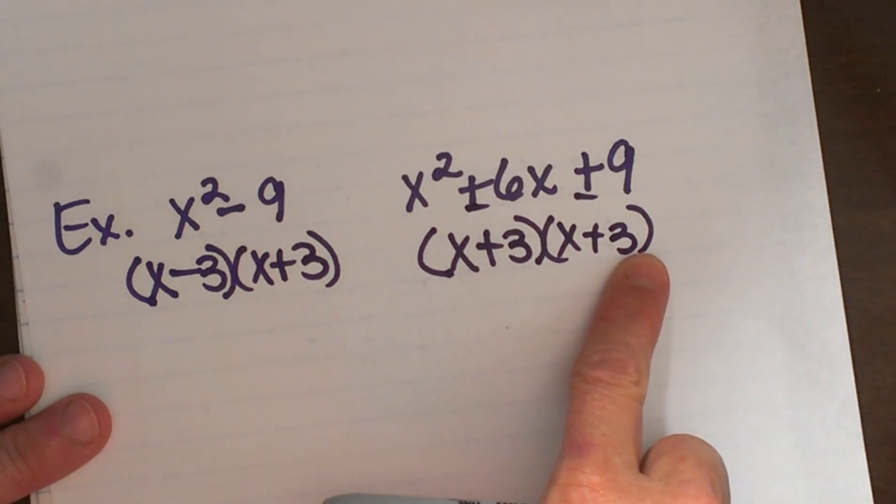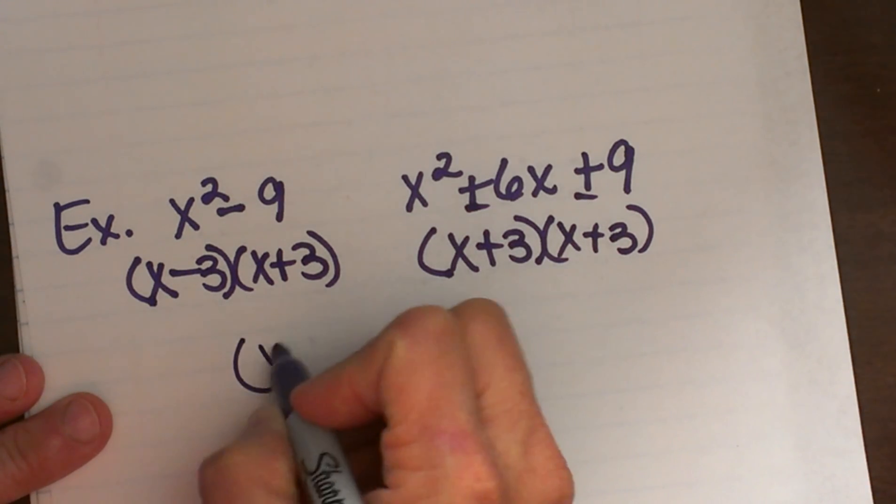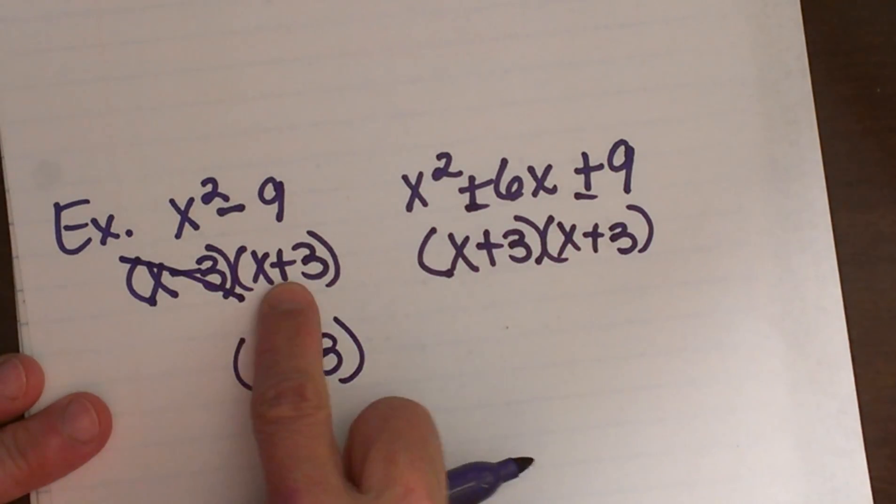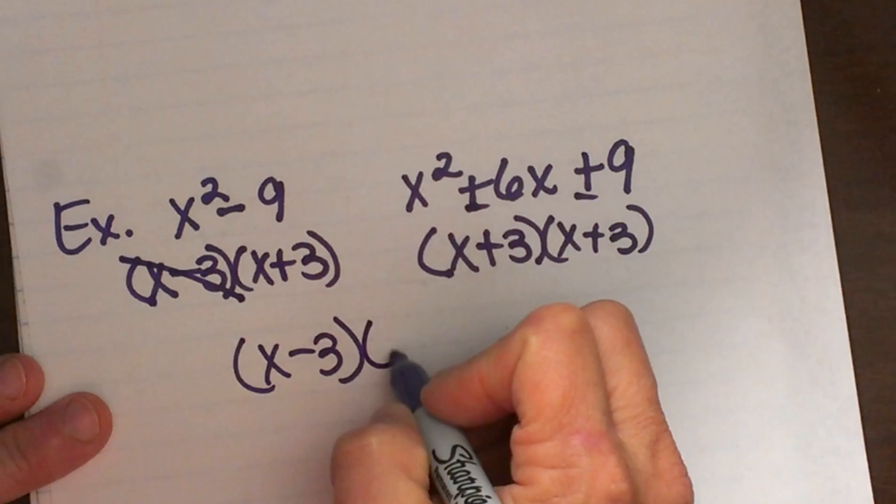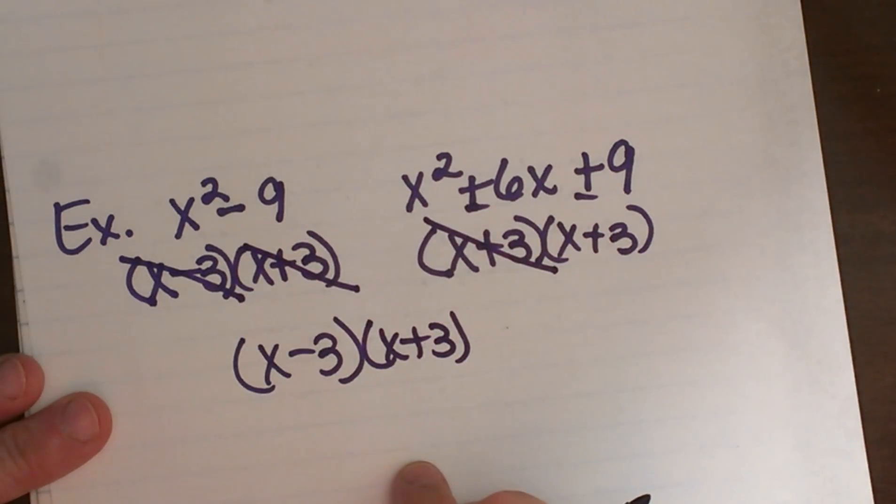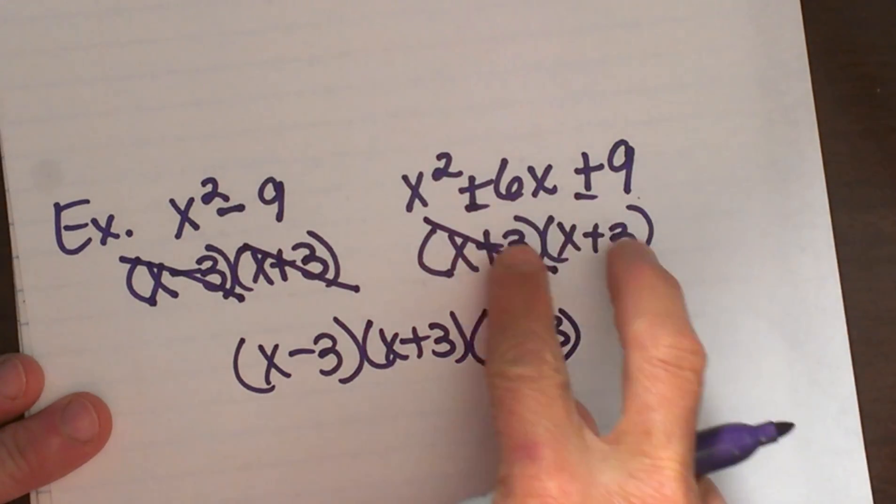So those two are factored. Now let's start bringing down our factors. I am going to bring down first this x minus 3 so it accounts for that one and there is not an x minus 3 over here. This one has an x plus 3 but I do not want to duplicate it so I am going to cross that one out and then I have another x plus 3 so I have to account for both of these. And that is my least common multiple and that is how you find them.